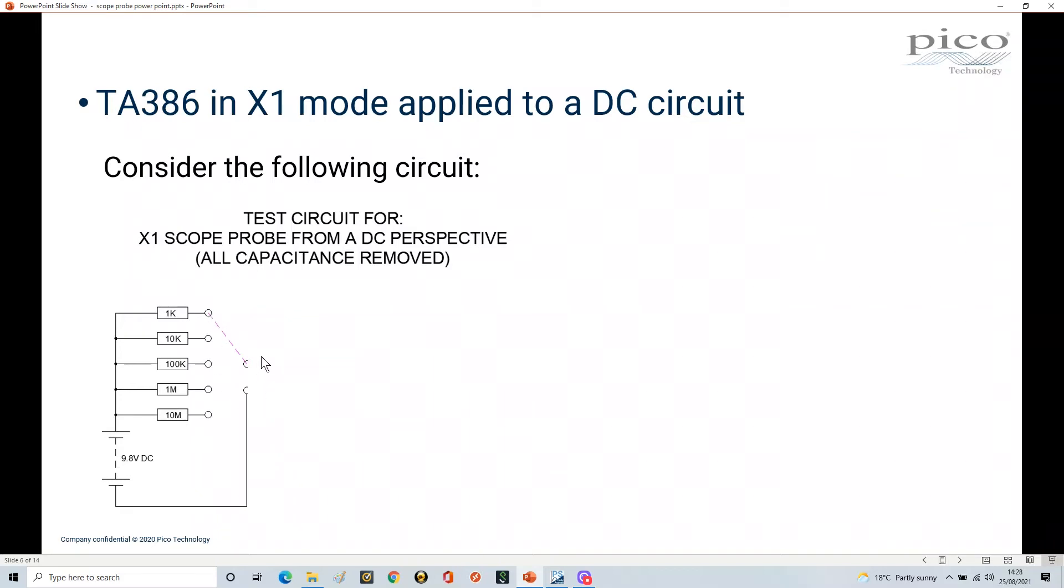Ideally, your test equipment shouldn't change any of the characteristics in your circuit. So ideally, if this was a perfect piece of equipment, it would have infinite load resistance so it didn't affect your circuit. In this condition, if I put my test equipment across here to ground, because this has infinite impedance, there's no current flowing through here. Therefore, the voltage here is the same as the voltage there, and that's our ideal scenario. However, in reality, that's not what happens, and this is why it's important to understand this.